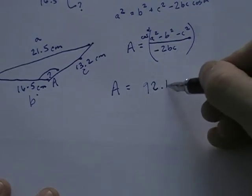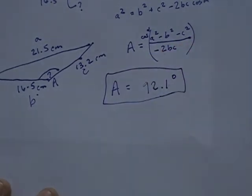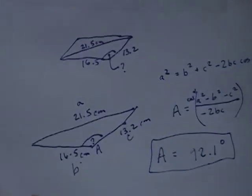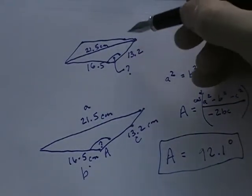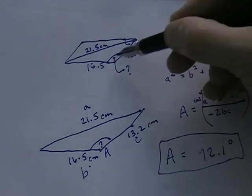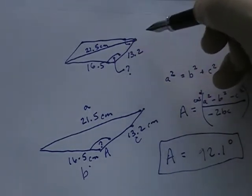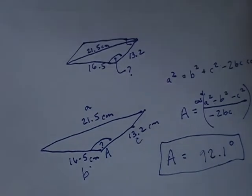So I'm going to call that 92.1 degrees. And so that is the larger angle in this parallelogram here. And of course, this smaller angle and this larger angle are going to add up to 180, and so you could find this smaller angle pretty easily.